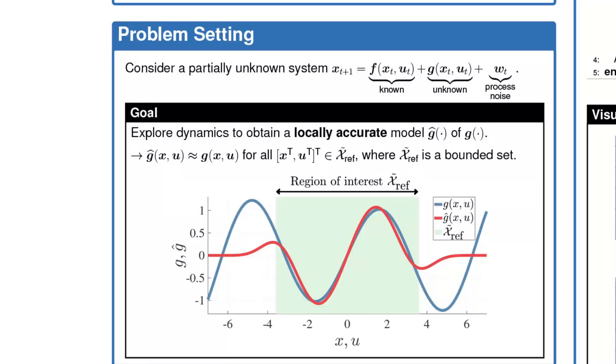Our problem setting considers a partially unknown dynamic system with stochastic disturbance as shown here. As the function f is assumed to be known, our goal is to learn the unknown function g such that it yields accurate predictions on a bounded subset of the state space denoted x_ref. x_ref may be, for example, the region associated with a particular control task.